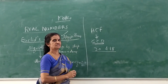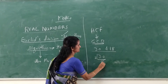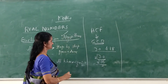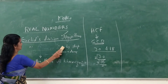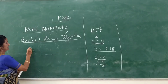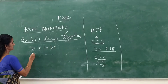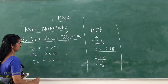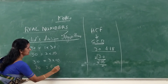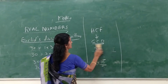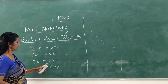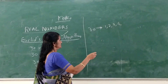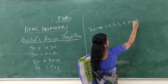Let us factorize these two numbers. For 30: 30 = 1×30, 30 = 2×15, 30 = 3×10, 30 = 5×6. Therefore, the factors of 30 are 1, 2, 3, 5, 6, 10, 15, and 30.